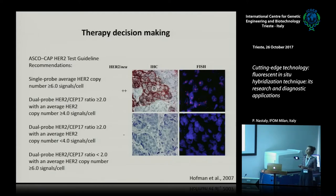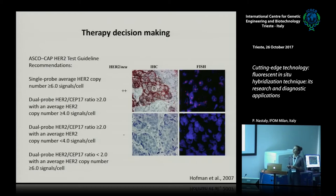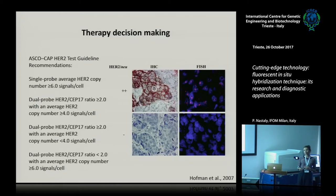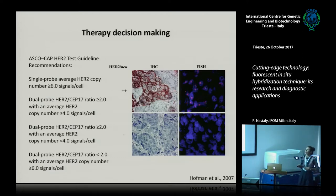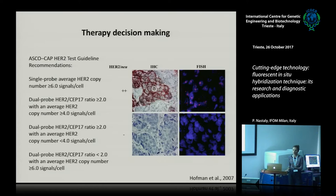The same applies to FISH for HER2. HER2 is an oncogene that shows overexpression in about 20% of breast carcinomas. It is usually diagnosed with immunohistochemistry, and this diagnosis is important because there is a drug available that targets HER2, called trastuzumab. Since overexpression is not always present, fluorescence in situ hybridization may serve as an additional marker to assign patients to trastuzumab therapy.